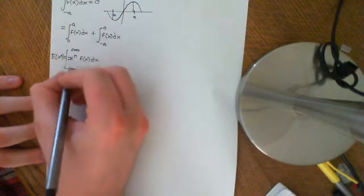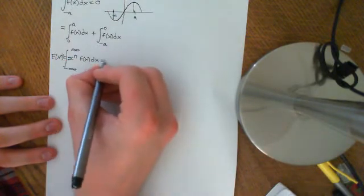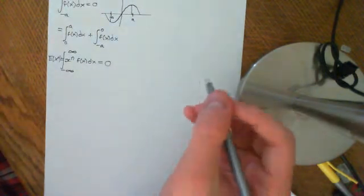And we're integrating symmetrically here. So this is always going to equal 0. So the odd moments of the standard normal distribution are all equal to 0.